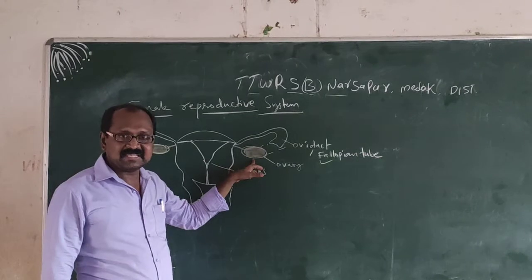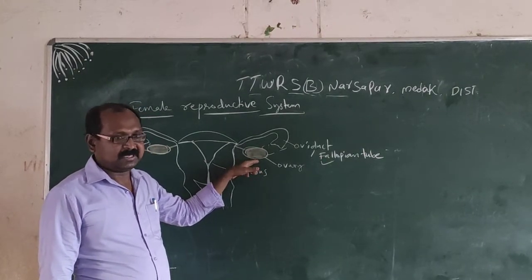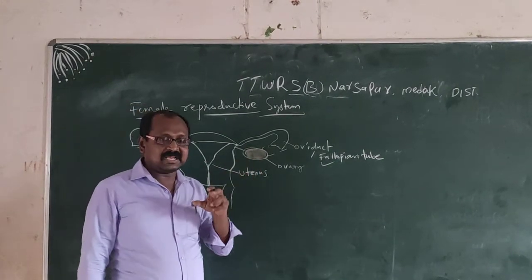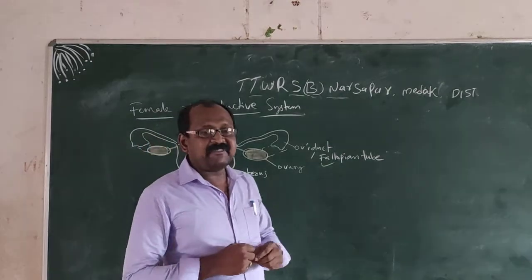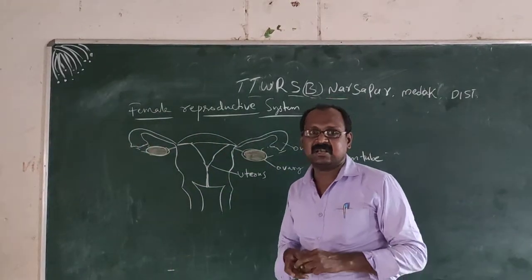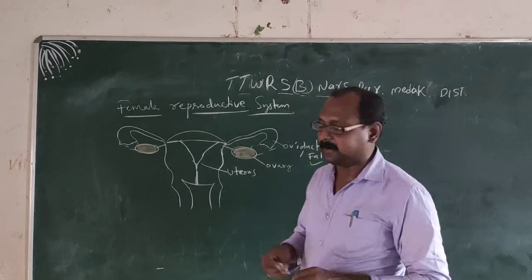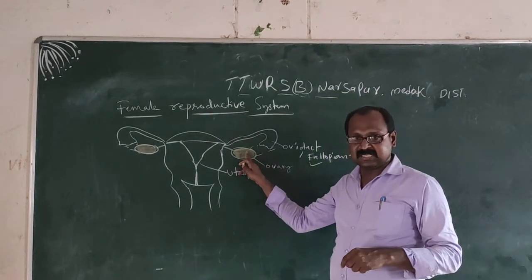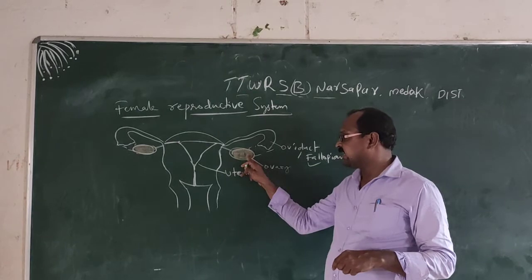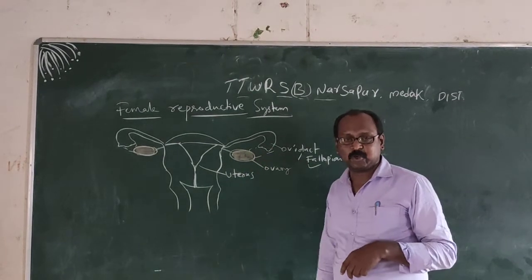First, the ovary releases an egg. The ovary releases an egg every 28 days, once per menstrual cycle. When the egg is released from the ovary, it reaches the fallopian tube.